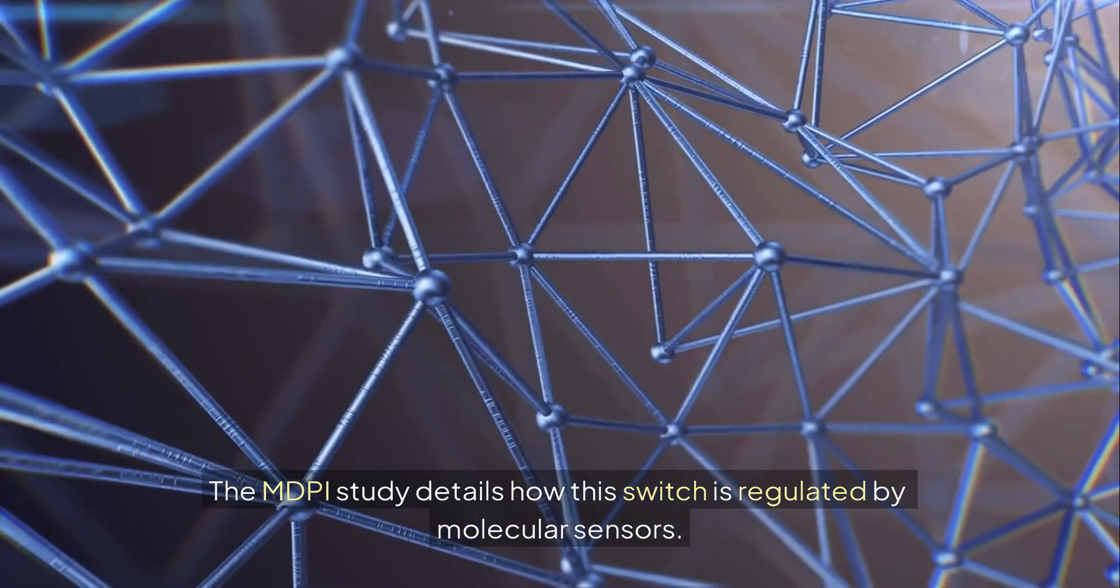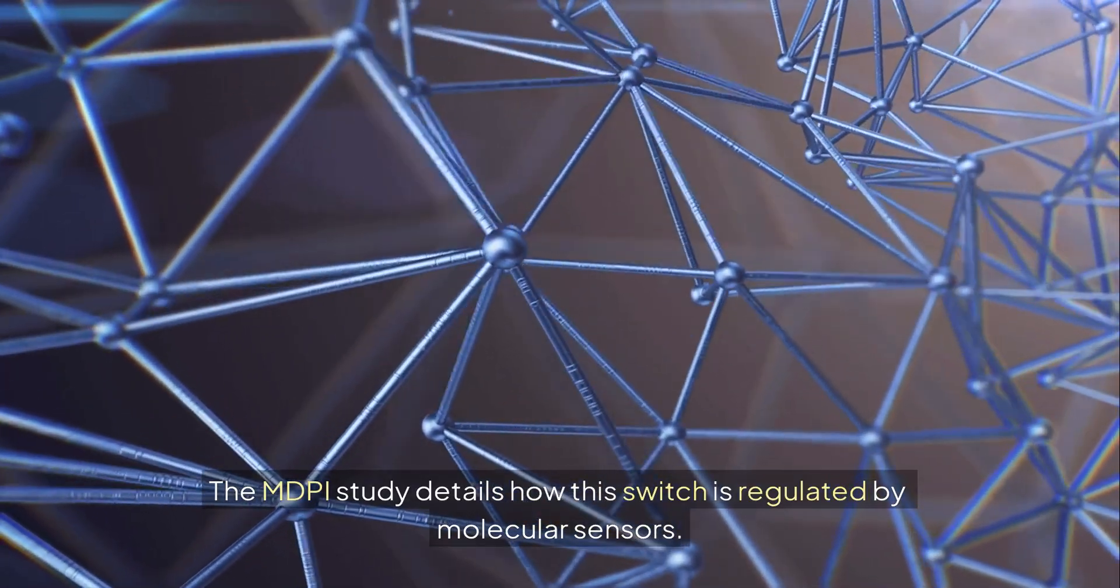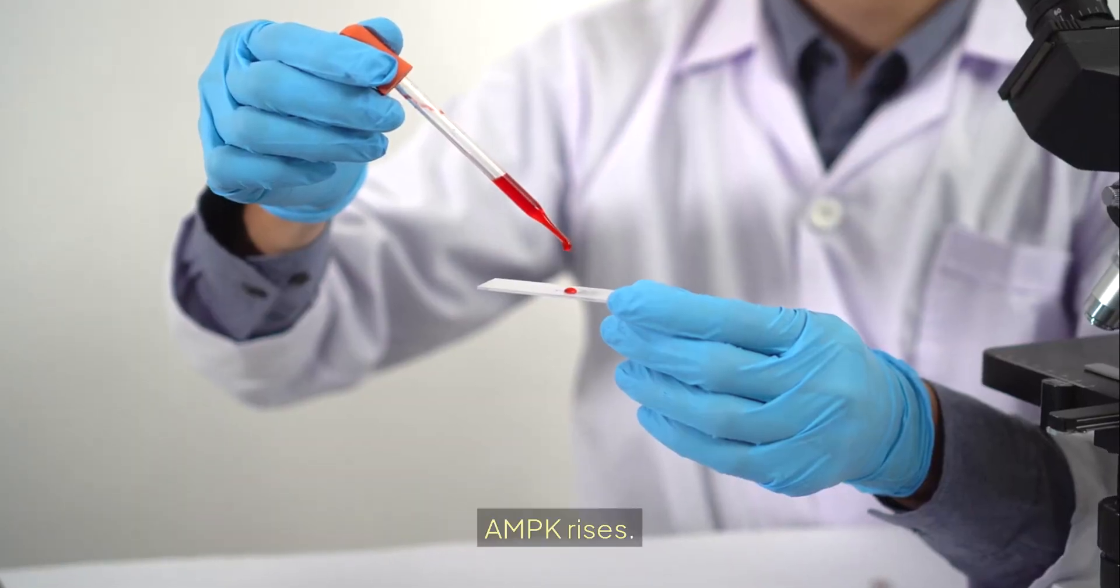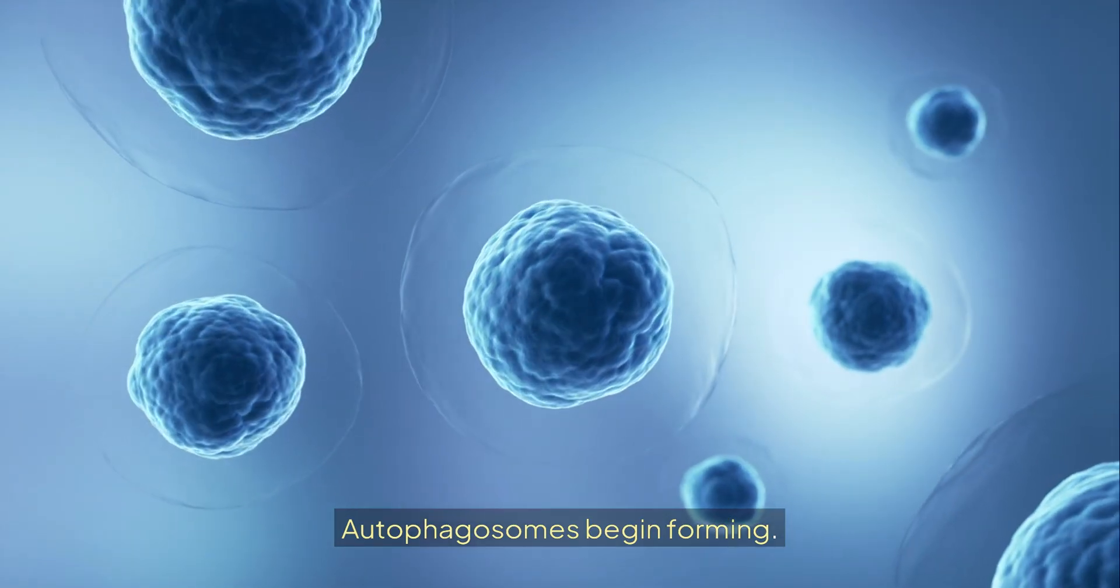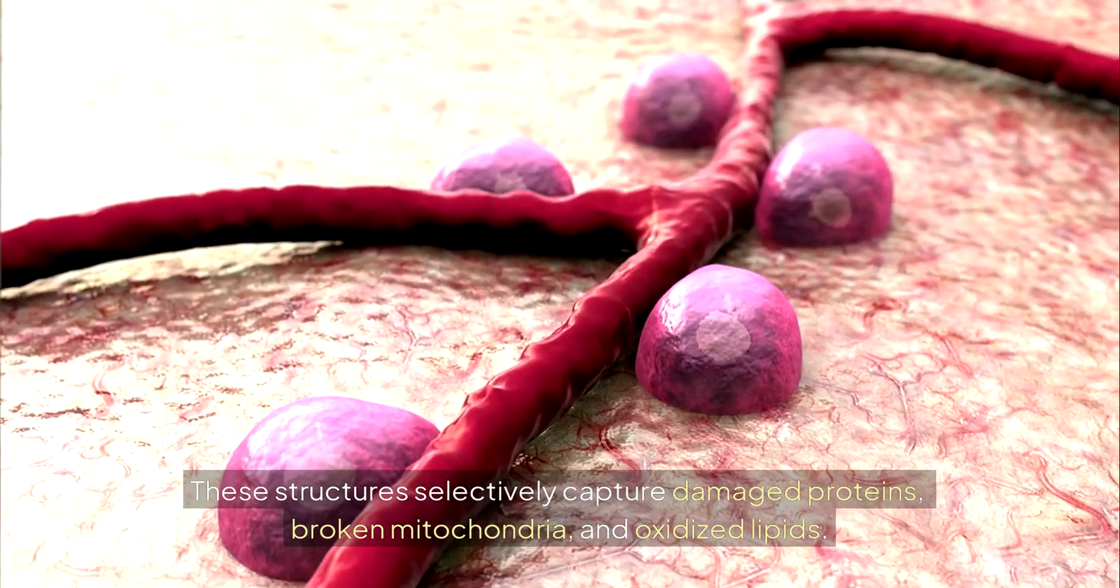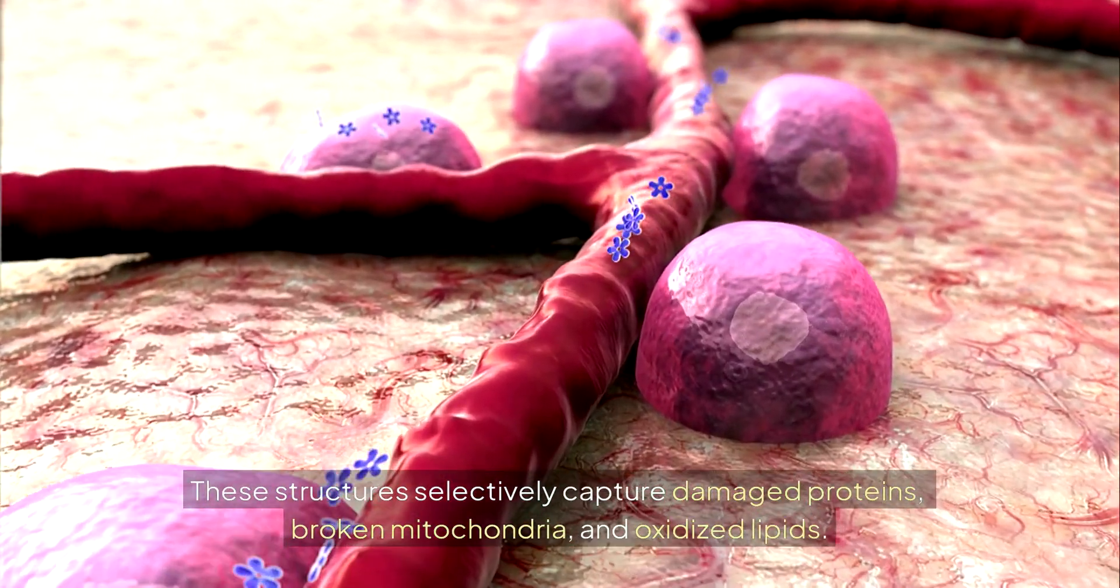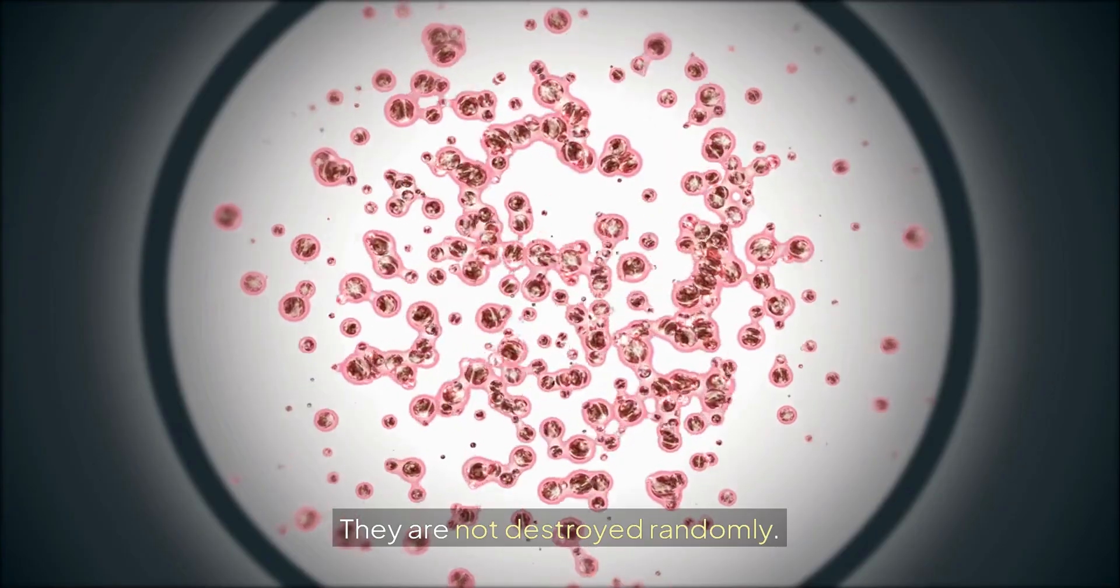The MDPI study details how this switch is regulated by molecular sensors. AMPK rises. mTOR shuts down. ULK1 activates. Autophagosomes begin forming. These structures selectively capture damaged proteins, broken mitochondria, and oxidized lipids. They are not destroyed randomly.